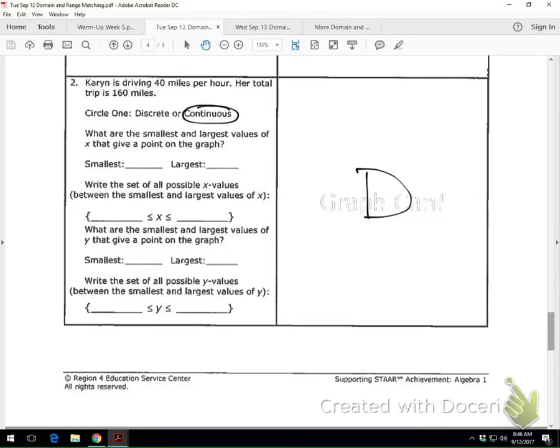Now, it says, what are the smallest and largest values of X that can give a point on the graph? So what's your smallest value of X? Zero. That means zero hours. What's our largest? What did y'all put right here for largest? Hold on. We got what? One sixty. I got a four. What else? It should be four. Because your X is always going to be time. Your X will always be time. So it took four hours to get the hundred and sixty miles at forty miles per hour. Forty times four, one sixty. So, then you just take that and write it like this. Zero, less than or equal to X, less than or equal to four.